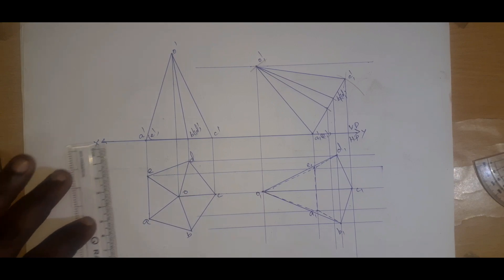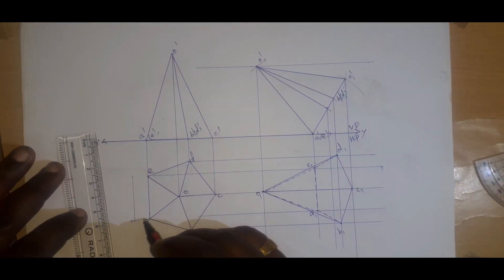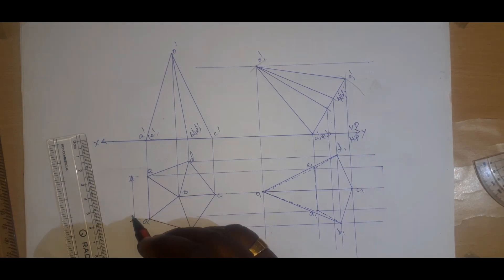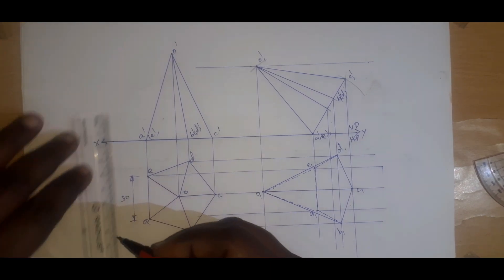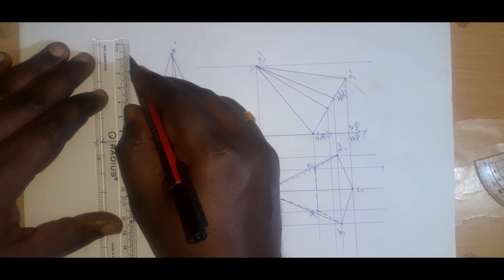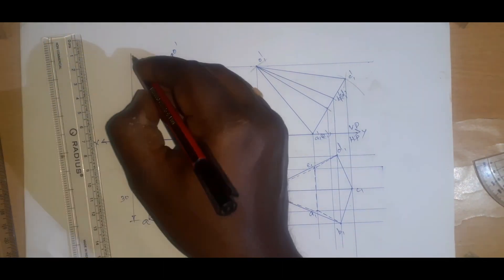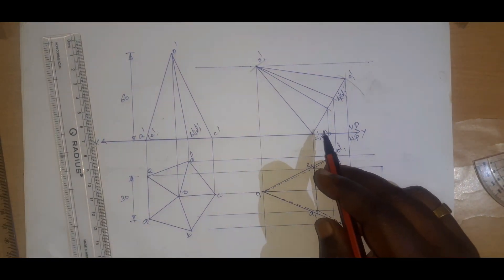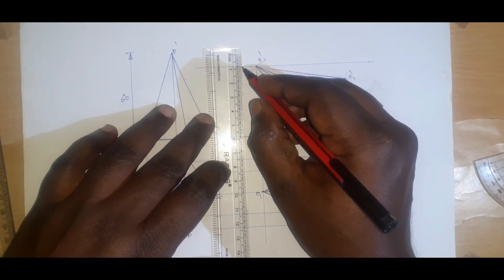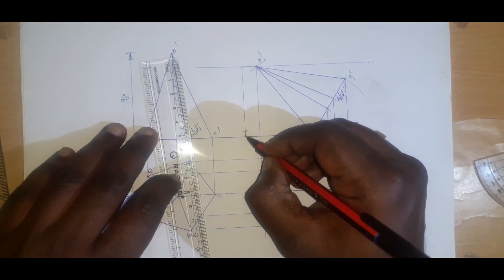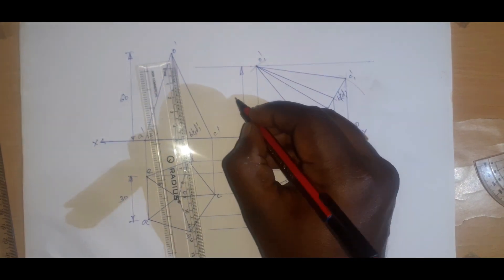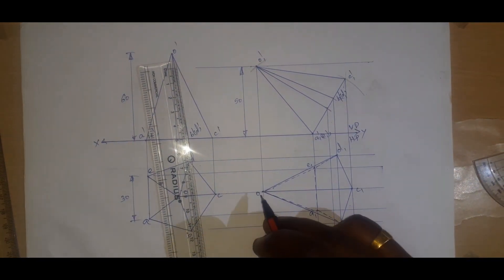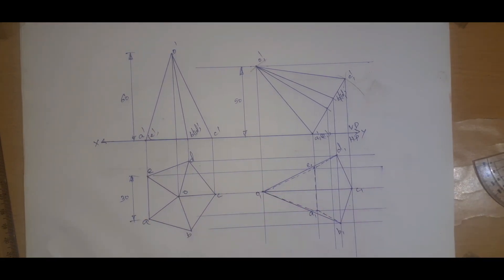This is a way of proceeding the problem. You can also add dimensions: the side is 30 mm and the altitude is 60 mm. They have not given any angle; instead, they have given this height as 50 mm. You can write here: all dimensions are in millimeters. Thank you.